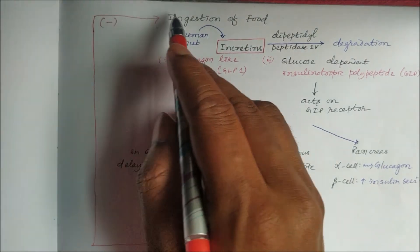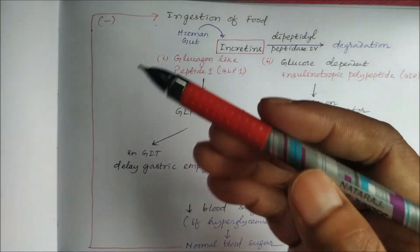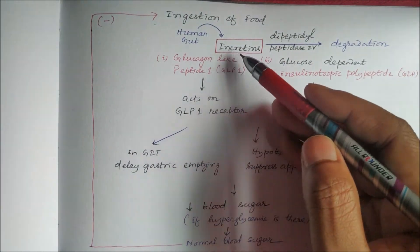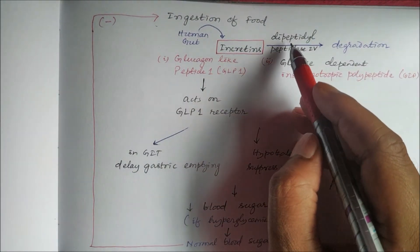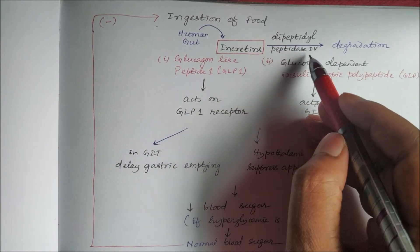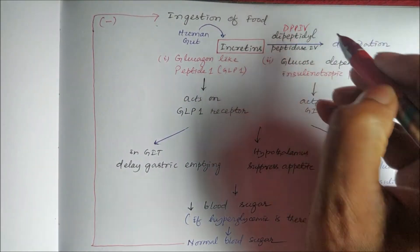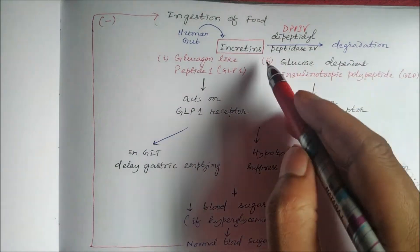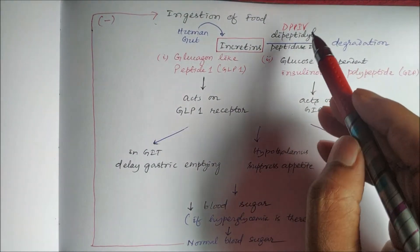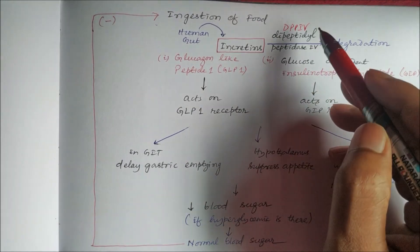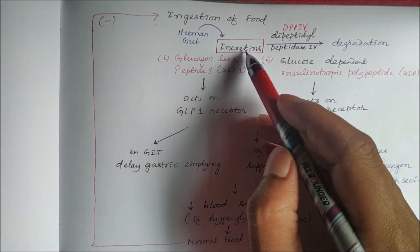When the normal blood sugar level is restored, the negative feedback mechanism operates and there is no more release of incretins. These incretins are degraded by the enzyme Dipeptidyl Peptidase-4 (DPP-4). We can also administer DPP-4 inhibitors to increase incretin levels.